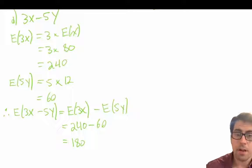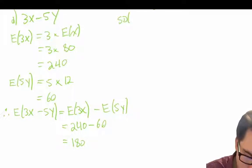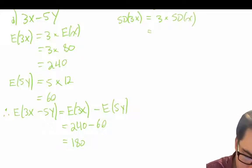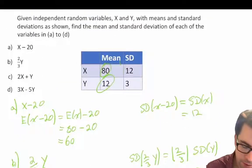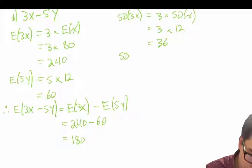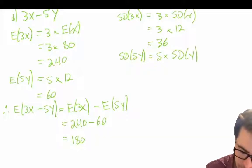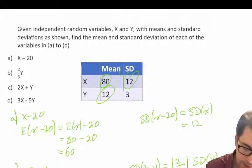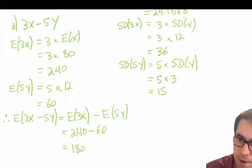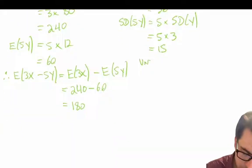Now there are a number of steps to calculate our standard deviation. Let's first find the standard deviation of 3X — this is going to be 3 times the standard deviation of X, so 3 times 12, which is 36. Our standard deviation of 5Y is equal to 5 times our standard deviation of Y. They've told us the standard deviation of Y is 3, so the standard deviation of 5Y is equal to 5 times 3, which is 15.